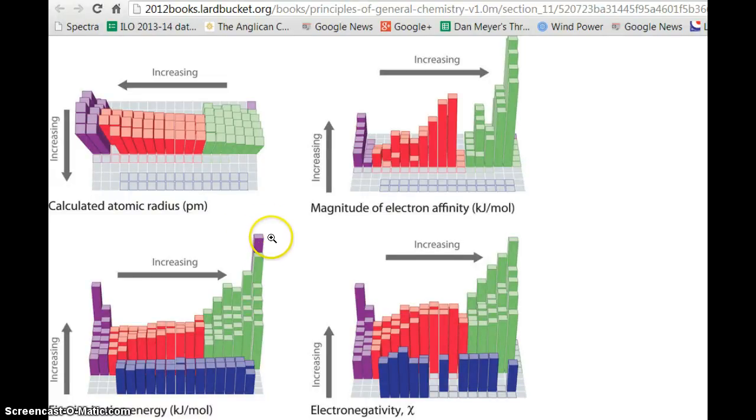So, fluorine has a very high ionization energy. It doesn't want to give up electrons. And fluorine has a very high electron affinity. It wants to get electrons. You can think of fluorine as an electron addict.